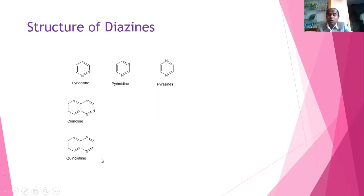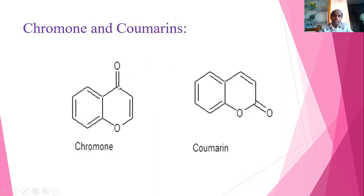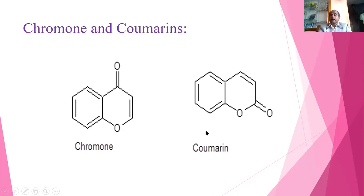Chromone and coumarin are both 6-membered oxygen-containing systems. Chromone is the benzo-derivative of pyranone (benzopyranone). Coumarin is the benzo-derivative of pyran-2-one. These compounds find application as anti-oxidants, and naturally occurring compounds such as flavones and isoflavones belong to this category.